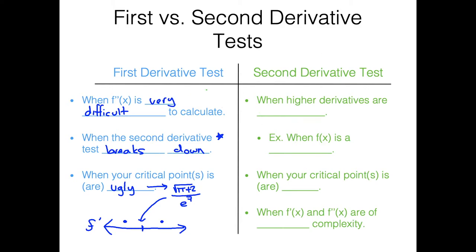Now, what about the second derivative test? The first situation favoring it is when higher-order derivatives are simpler — when taking more derivatives gives you simpler functions. An example of this would be a polynomial. When f of x is a polynomial like x to the fifth, taking more derivatives using the power rule gradually creates a simpler function. So using the second derivative test in this kind of case would actually be nicer because your end result is a much simpler function, making it a lot easier to work with.